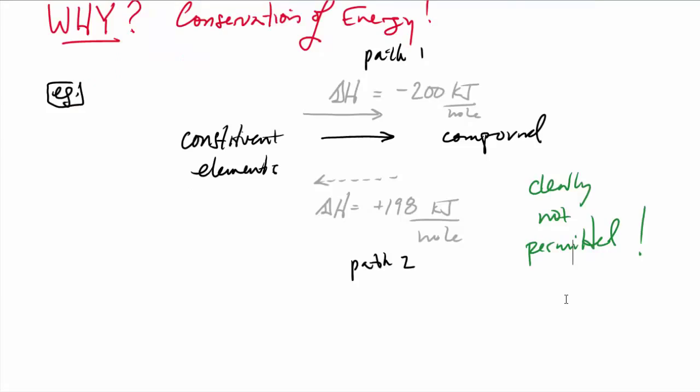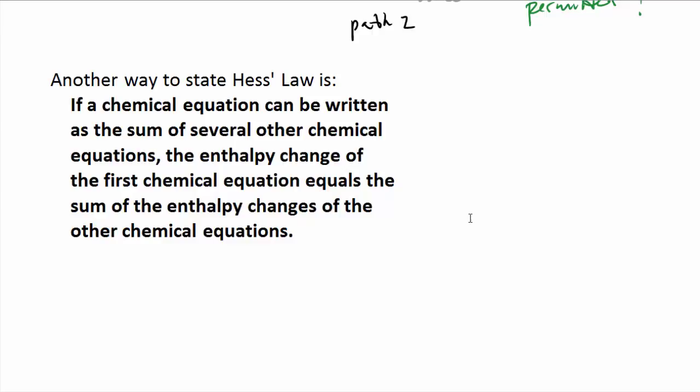The way you could state the law is this: if you had a reaction and you write it as some of other reactions, enthalpy change of the one you're looking for will be equal to the sum of the enthalpy changes of the other ones that add up to it.